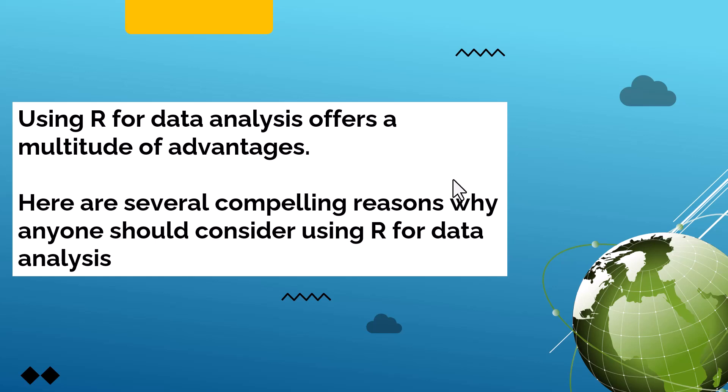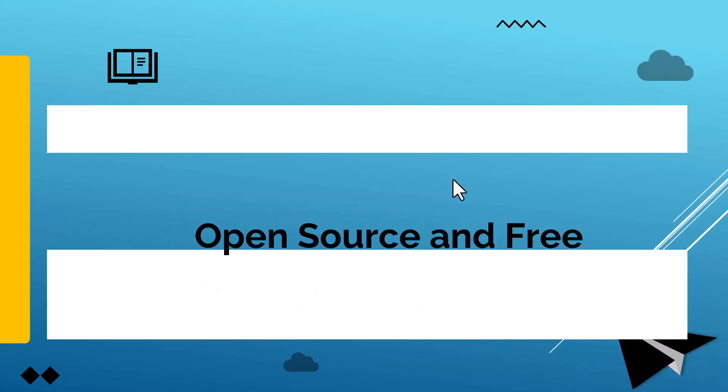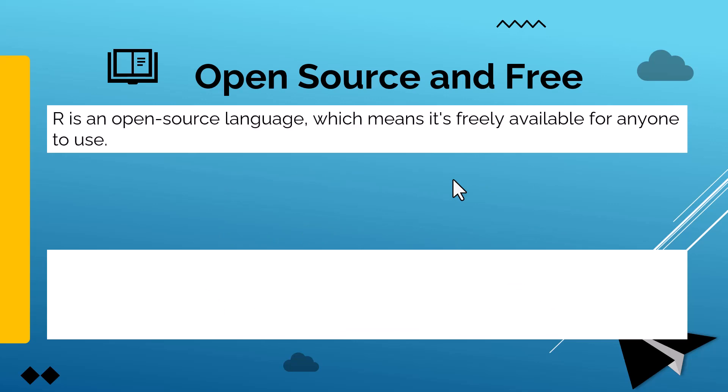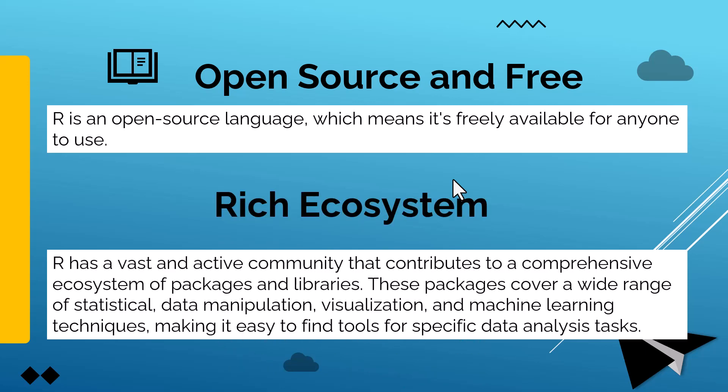First of all, R is an open source and free software, which means it's freely available for anyone to use. R also has a rich ecosystem — a vast and active community that contributes to a comprehensive ecosystem of packages and libraries. These packages cover a wide range of statistical, data manipulation, visualization, and machine learning techniques.